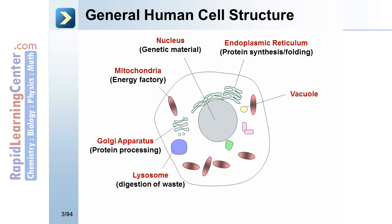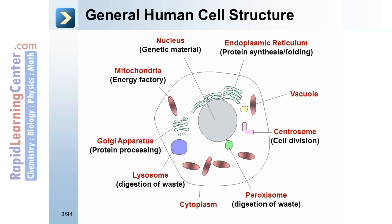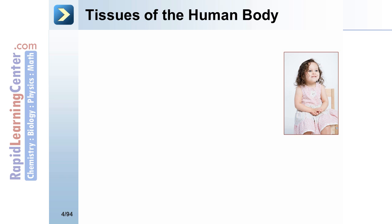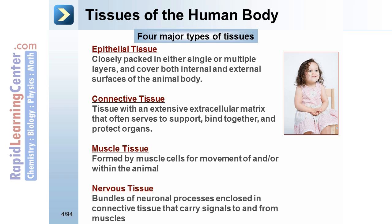The lysosome is involved in digestion of waste, as is the peroxisome. The vacuole stores materials. The centrosome is important for cell division. The cytoplasm is the matrix in which the organelles float, and the cell membrane encloses all of the organelles.